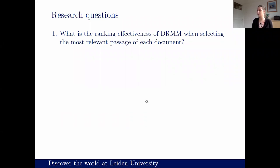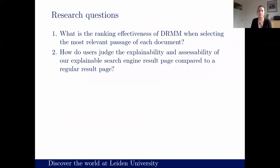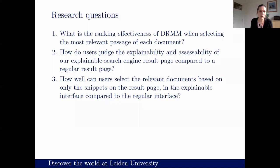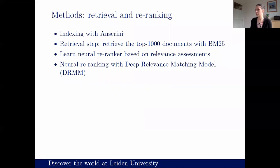We evaluated this with a user study. The questions we had were: first, what is the ranking effectiveness of the DRMM when doing passage-level retrieval? Second, for the user study, how do users assess and judge the explainability and accessibility of the result page? By accessibility, we mean how easy it is to estimate the relevance of the documents shown. We can also measure how capable users are at marking the relevant documents, since we have ground truth relevance assessments for the collection.